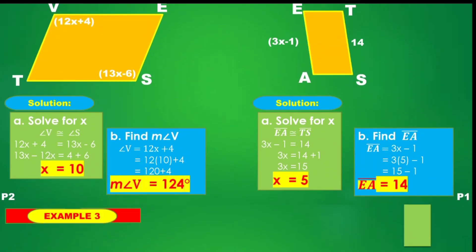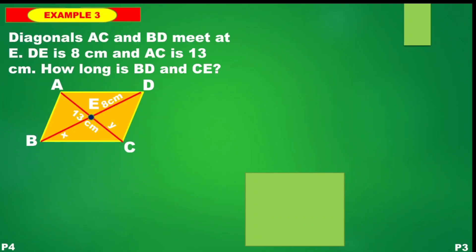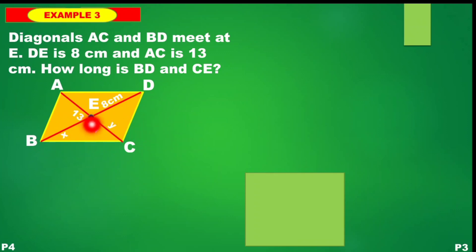Let's move on to example number 3. Diagonals AC and BD — here they are. They meet at point E, which is the intersection. It says segment DE measures 8 cm.